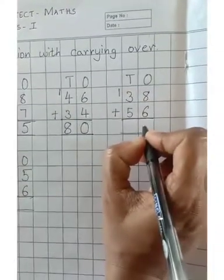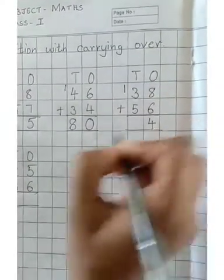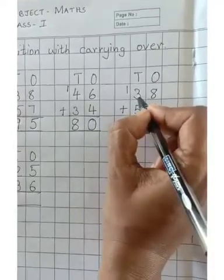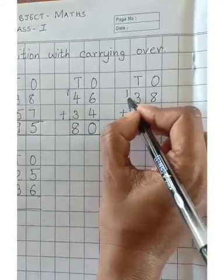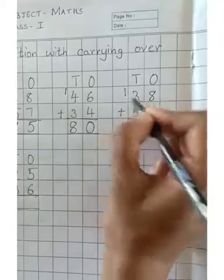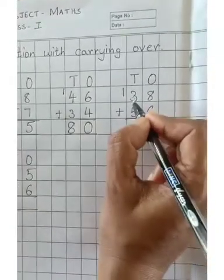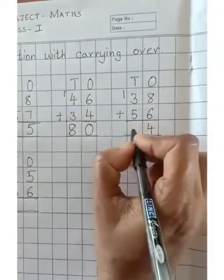Carry 1 and put 4 in the ones place. 3 plus 1 is 4. 4 plus 5 is 9.